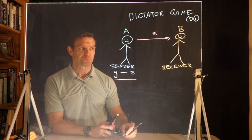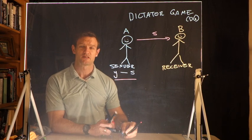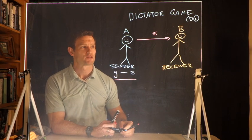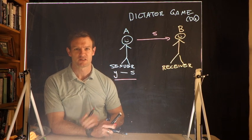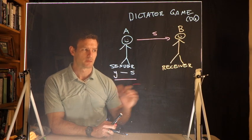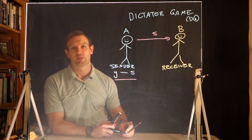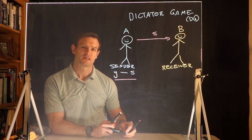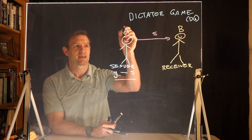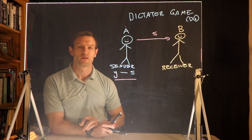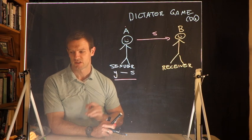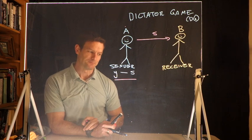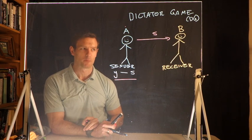At the same time, sometimes people criticize this as being a little manufactured, as in most situations people do not just get windfall amounts of money like $20 where they're asked to give some amount to another person. To understand this, some people have done dictator games where person A has to do a task to earn their money, such as stuffing letters or doing mathematical problems, and then they're given the opportunity to give some of that earned money.